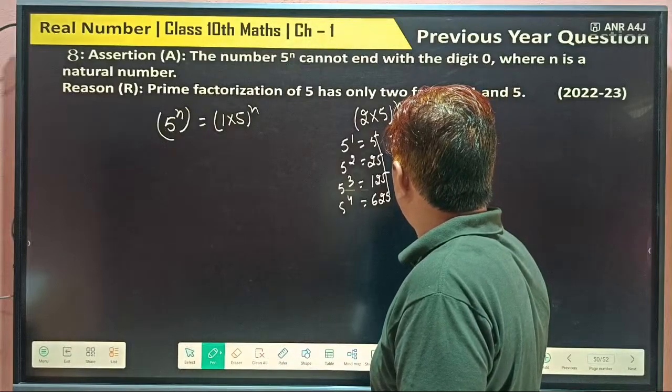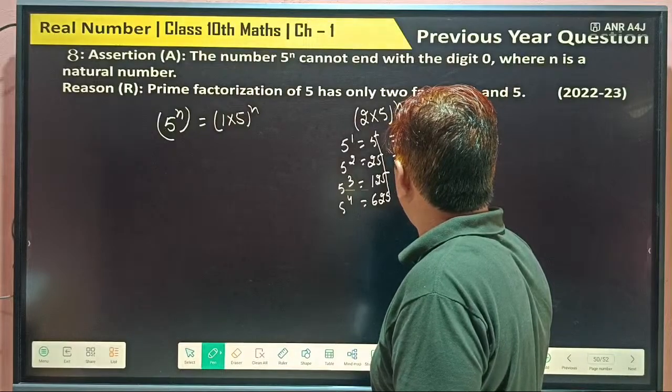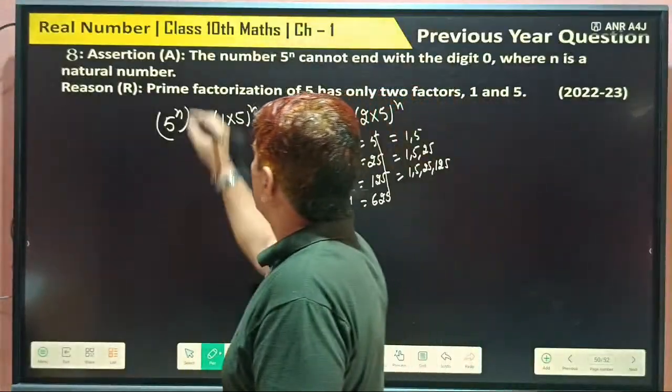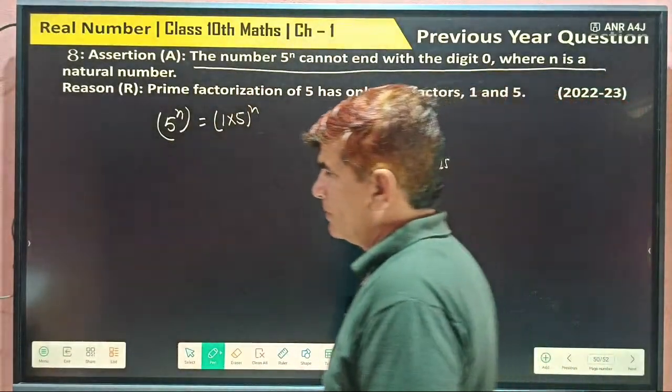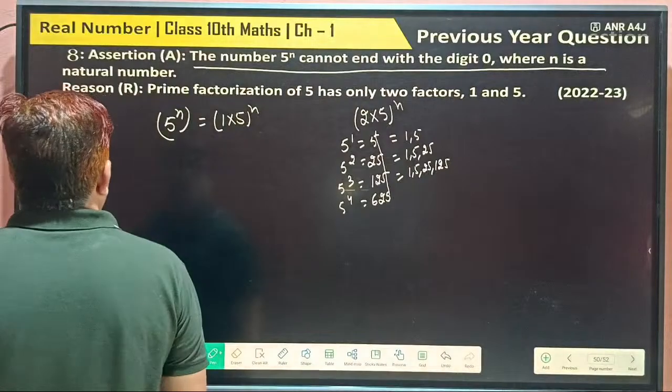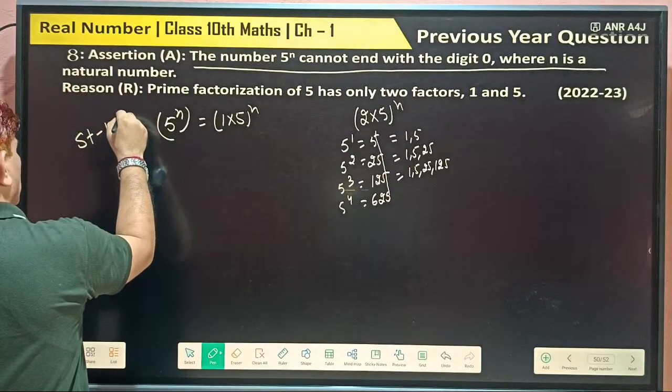And 25 we can say, 1 and 5. And what? 25, 125. So 2 is not there. So it's meaning your statement 1 is right. Statement 1 is right.